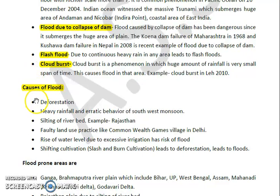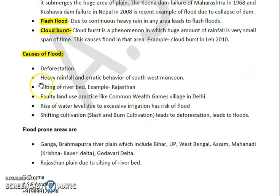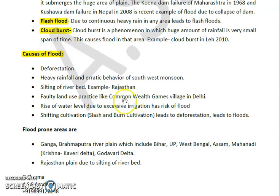Now let's see some causes of flood. One important cause is deforestation — less trees means more erosion and more flood. Heavy rainfall with erratic behavior of the southwest monsoon is another reason. Silting of river beds is also a cause; for example, in Rajasthan a lot of silt gets deposited into the river bed, raising the water level. Faulty land use practices are also a cause, such as the construction of the Commonwealth Games village on the flood plain near Akshardham temple.